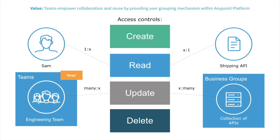Resources can be grouped together using business groups. On the left-hand side, we have users of your AnyPoint platform organization. Users can be grouped together using teams. So, in summary, with teams and business groups, organization admins can assign access controls as one-to-one, one-to-many, many-to-one, or many-to-many.